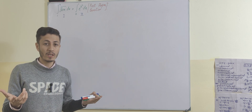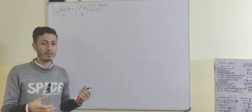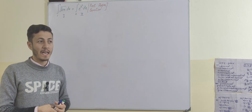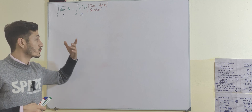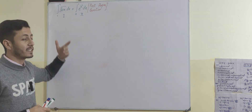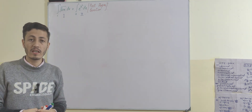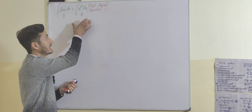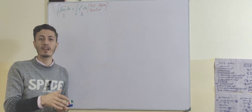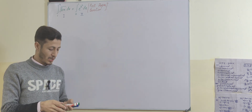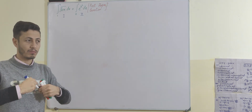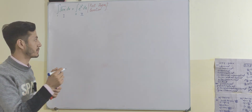So what do we do with the second part? Let's try to solve the first part of the integrand in such a way that the second part of the integrand is regenerated in negative form. Let's try to apply this concept.